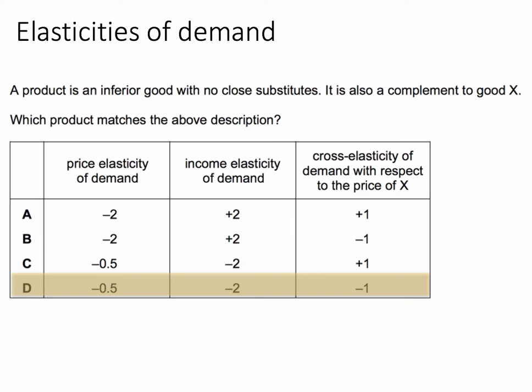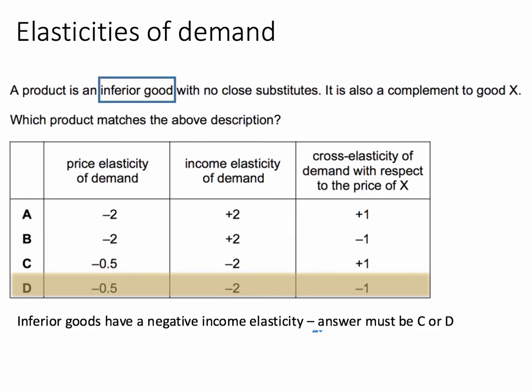Going back to the stimulus material: first of all, the product is an inferior good. An inferior good has a negative income elasticity of demand — demand falls as income goes up. So the answer must be C or D; we can eliminate A and B.